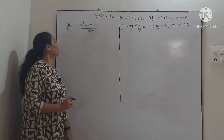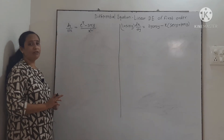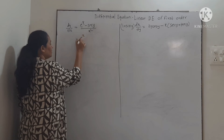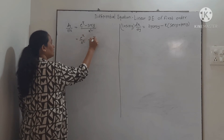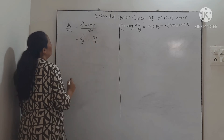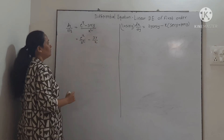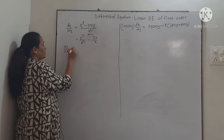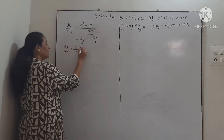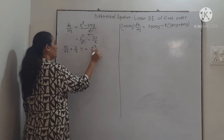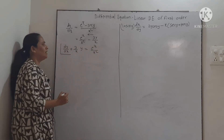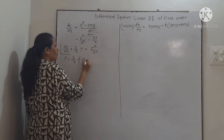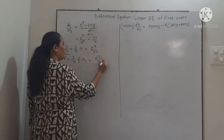We will take the next example. Consider dy/dx = (e^x − 3xy)/x². Separating the denominator, it is e^x/x² − 3y/x. Transferring the y term to the left: dy/dx + (3/x) · y = e^x/x². This is linear in y. The value of P is 3/x and Q = e^x/x².